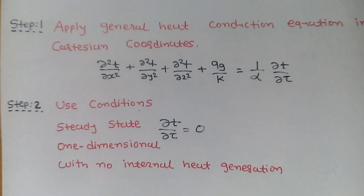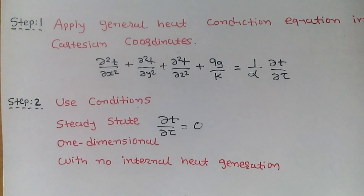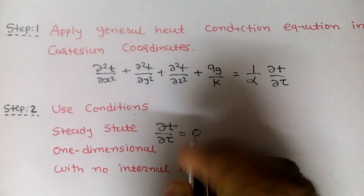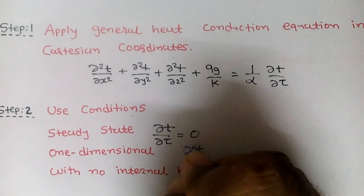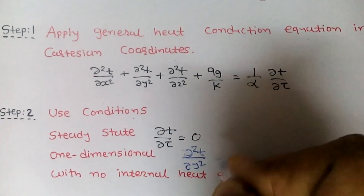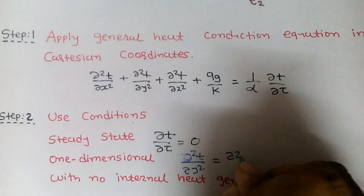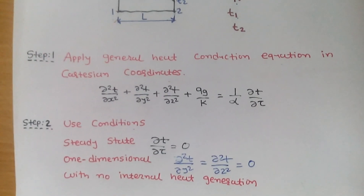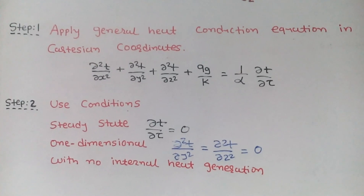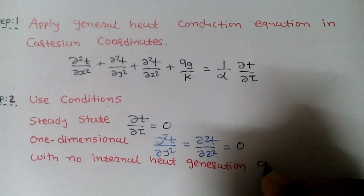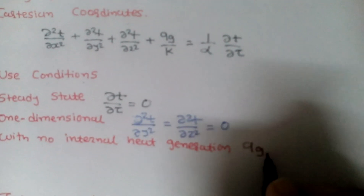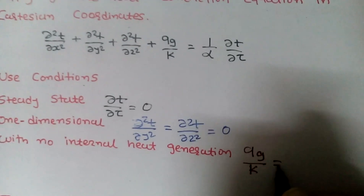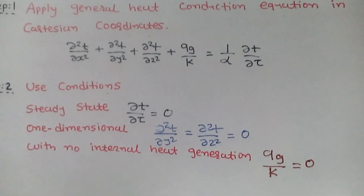The second condition is one-dimensional, which means we consider only one direction, so the other two directions are zero: ∂²T/∂y² = 0 and ∂²T/∂z² = 0. The third condition is with no internal heat generation, meaning qg = 0, so qg/k = 0.